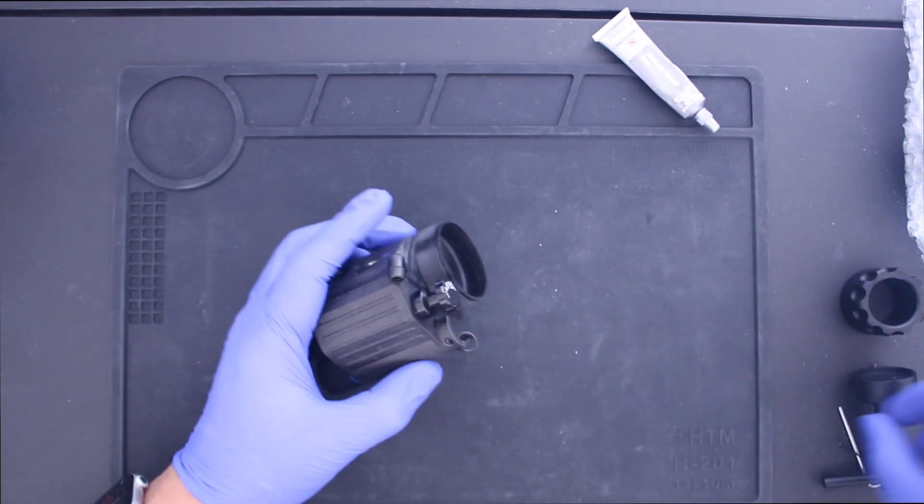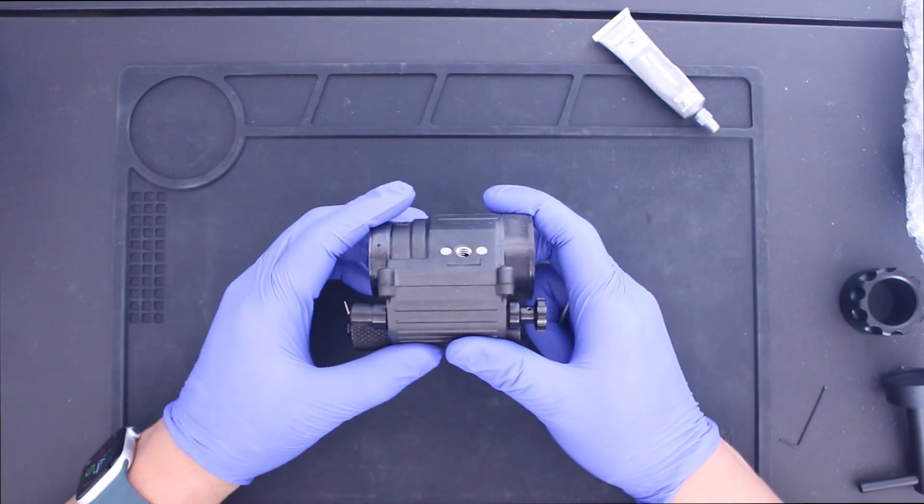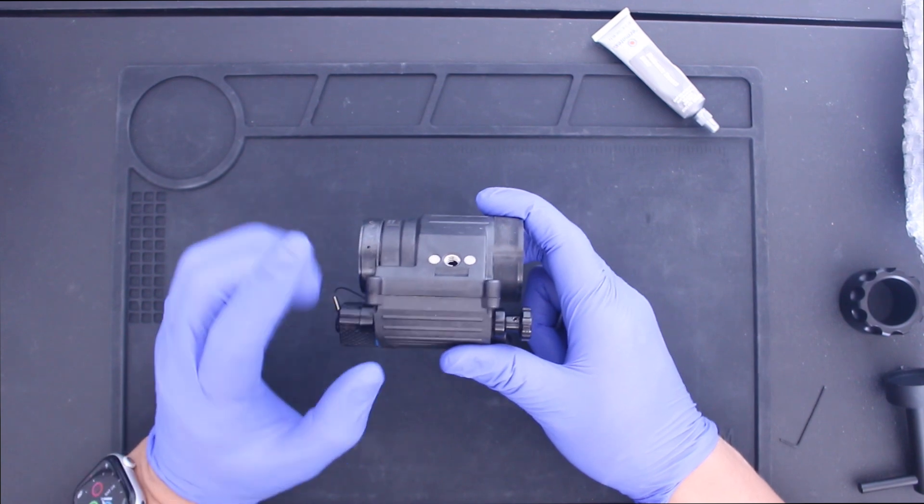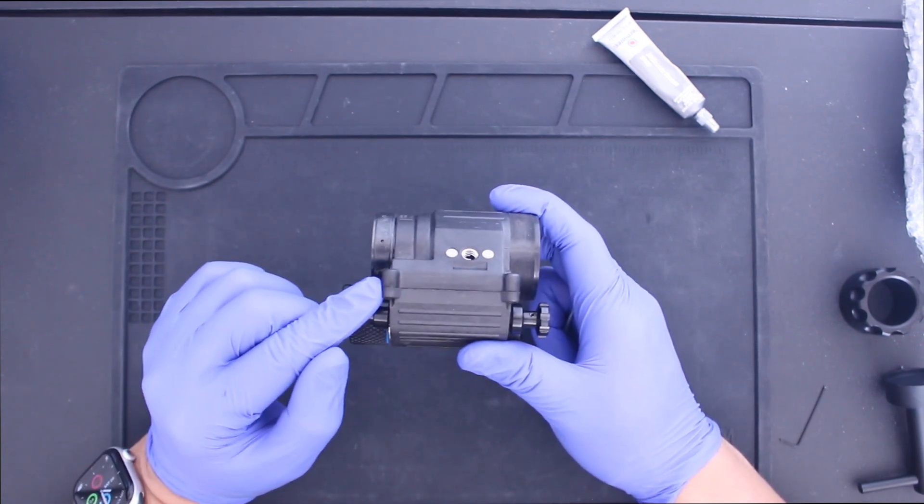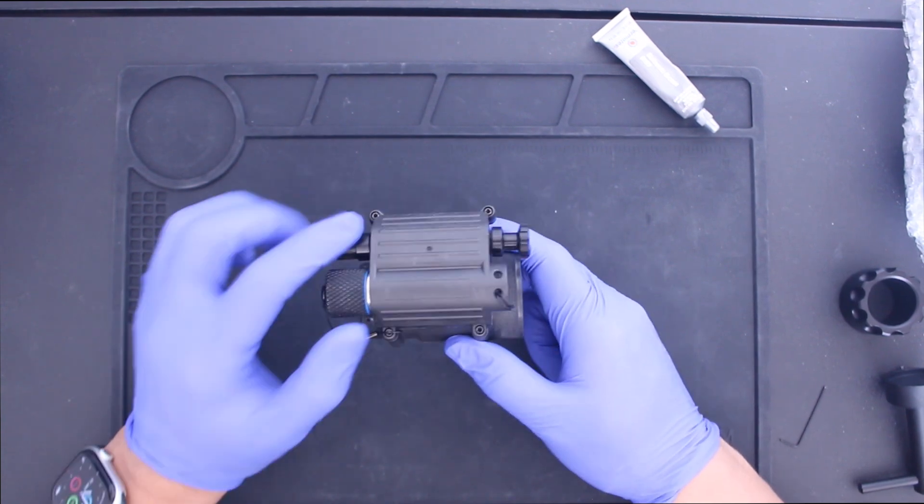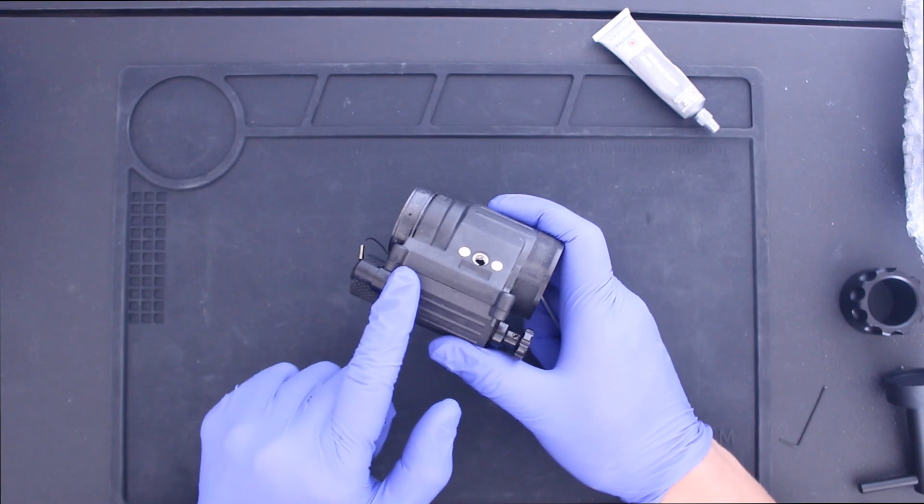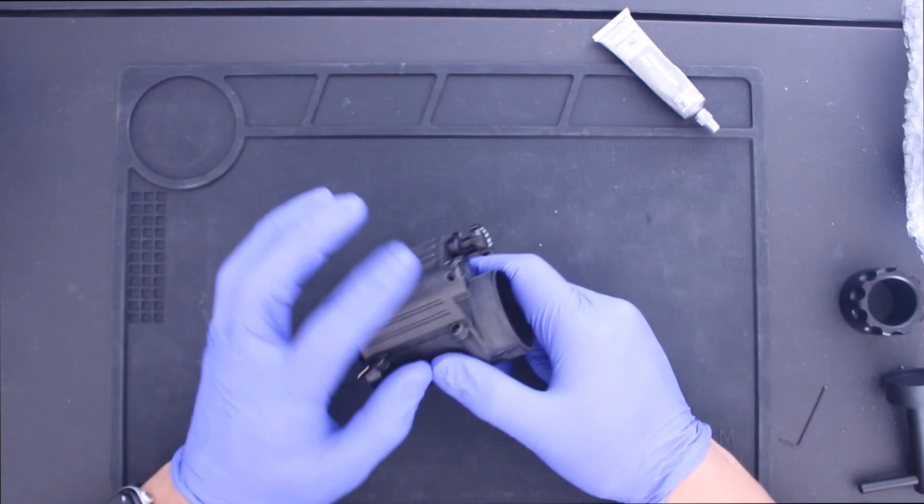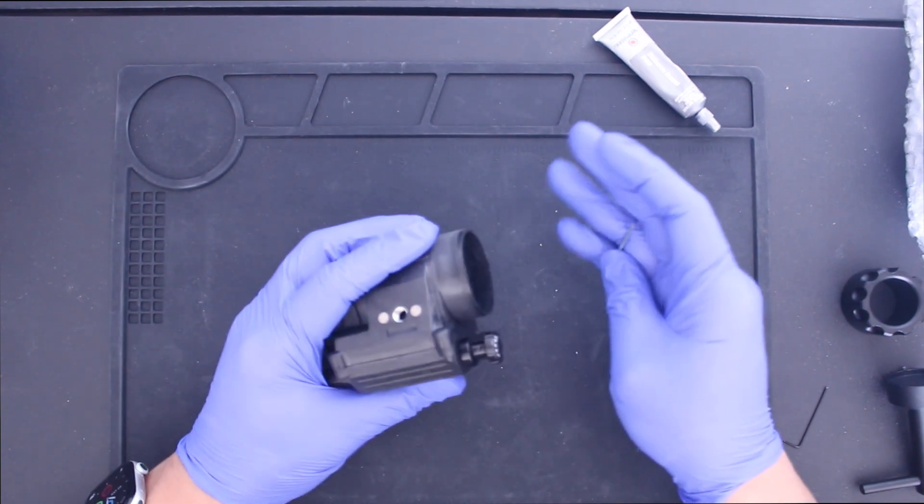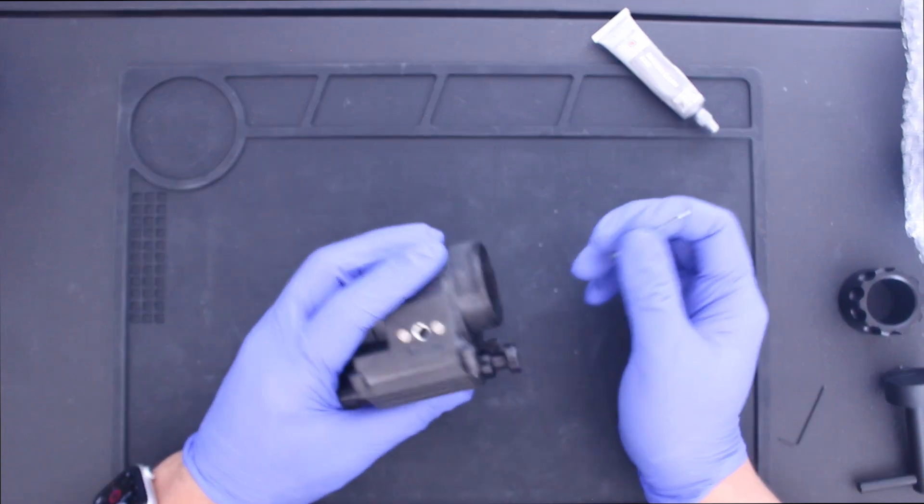And a couple other things you have to watch out for is when you are connecting the battery compartment to the main housing, you have to be careful about how much torque you apply to these screws. There's four screws. And if you over torque it, you will crack the battery housing at these posts right here. And you don't want to do that. So just be careful when you're screwing these in. Just make sure it's snug and you'll be fine.